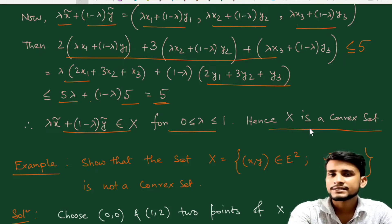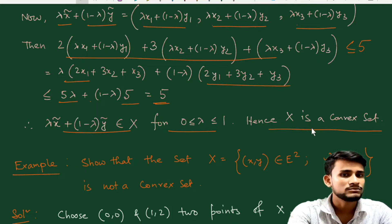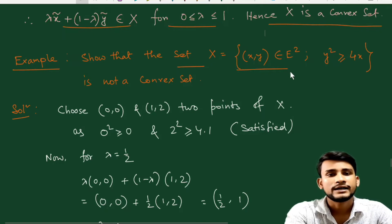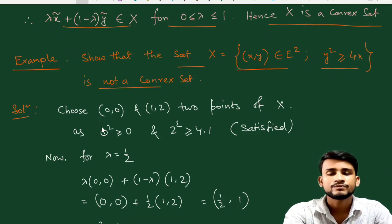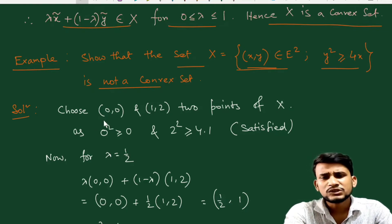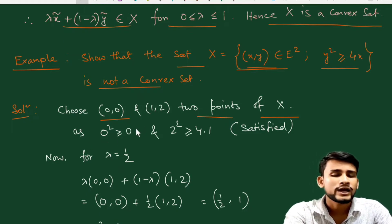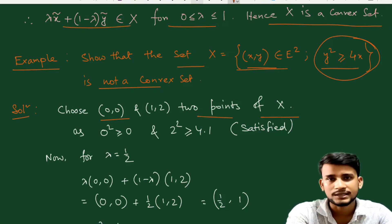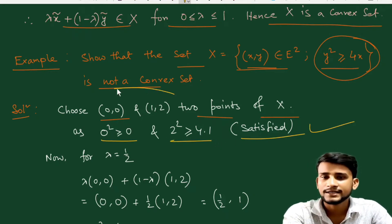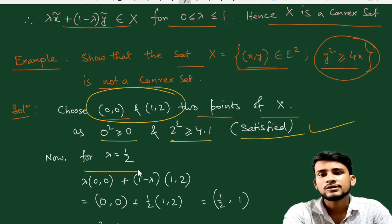My guess is that in GATE 2023, one question from convex sets will definitely come. Next example: the set X = {(x, y) : y² ≥ x} is NOT a convex set. To show this, we choose two points from X. We pick (0, 0) and (1, 2): 0² = 0 ≥ 0 is satisfied, and 2² = 4 ≥ 1 is satisfied, so both points belong to X.